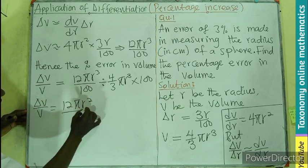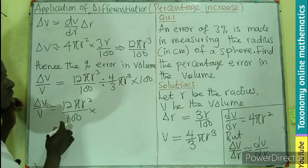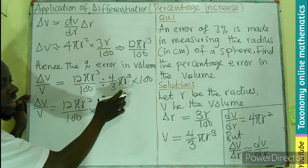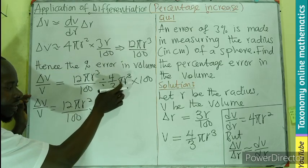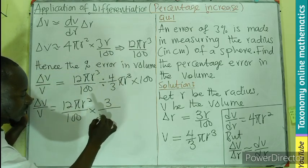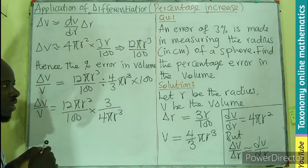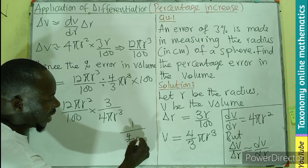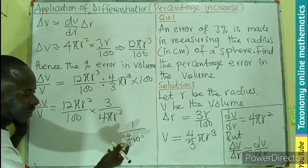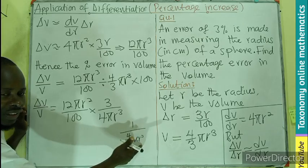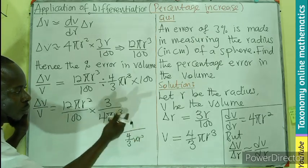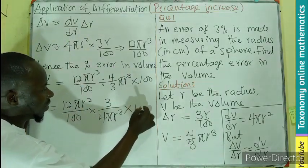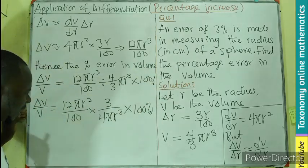We can change this to become delta V on V equals 12 pi r cubed divided by 100 times, when we are flipping this over, 3 is going up, 4 is coming down. So 3 will be up, 4 will go down pi r cubed. When we flip this, 3 will be going up, therefore the 4 will remain with the denominator. Then we multiply by the 100% we have here.